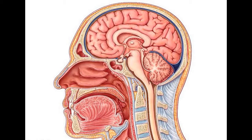You can see this diagram — a sagittal section of the head and the brain. This is the nasal cavity, the tongue, and the oral cavity with the small passages. This is the pharynx: nasopharynx, oropharynx, and laryngopharynx.